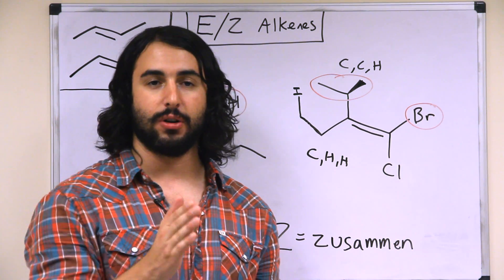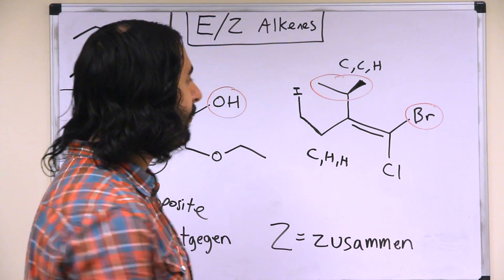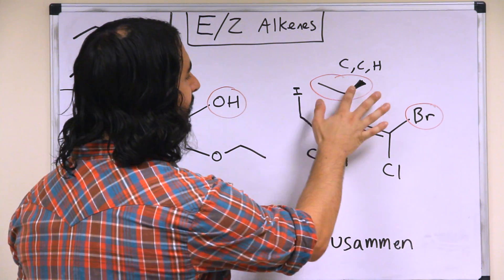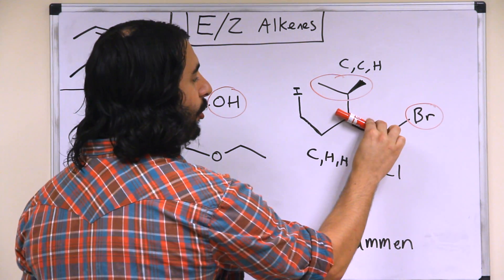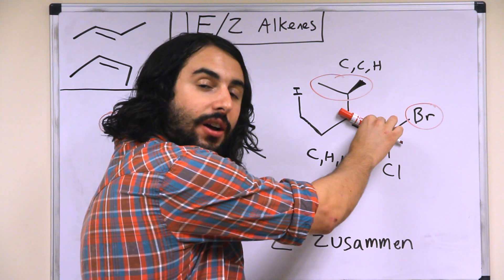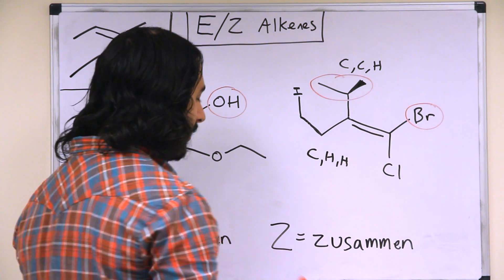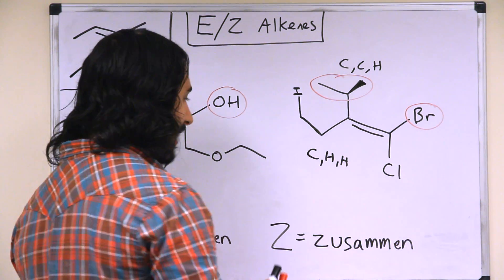So now that we have decided that the two high priority groups are on the same side of the plane of the double bond, then we are realizing that they are zusammen and this is Z.